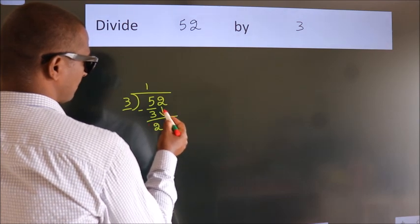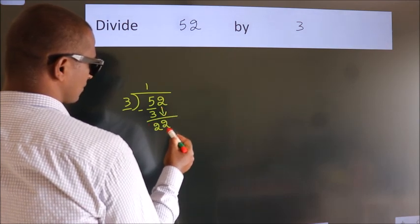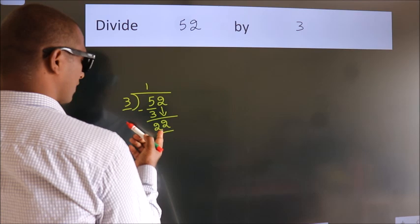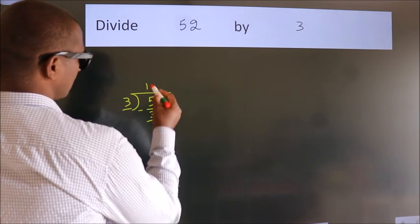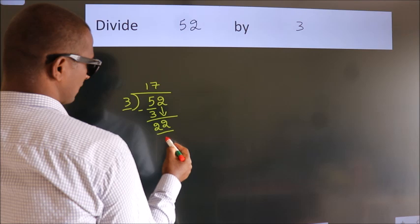bring down the beside number, so 2 down, so 22. A number close to 22 in 3 table is 3 7 21.